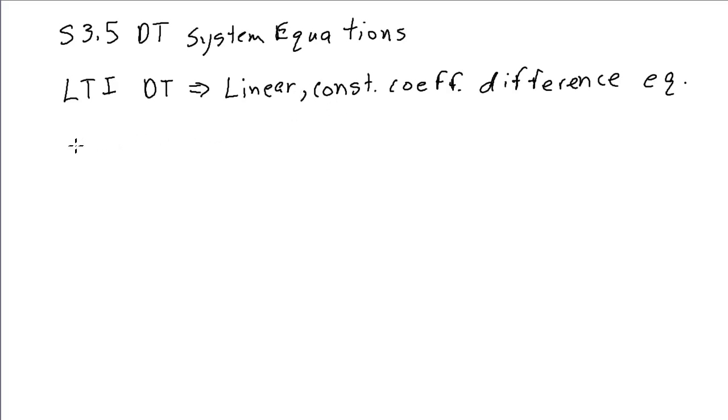In the general case, a difference equation would have this form, where n is my sequence variable, and capital N represents a maximum advance. We'll use a's with subscripts to represent the coefficients on the output terms, so this would be an advance of capital N minus 1 down to A of capital N multiplied by Y of N.